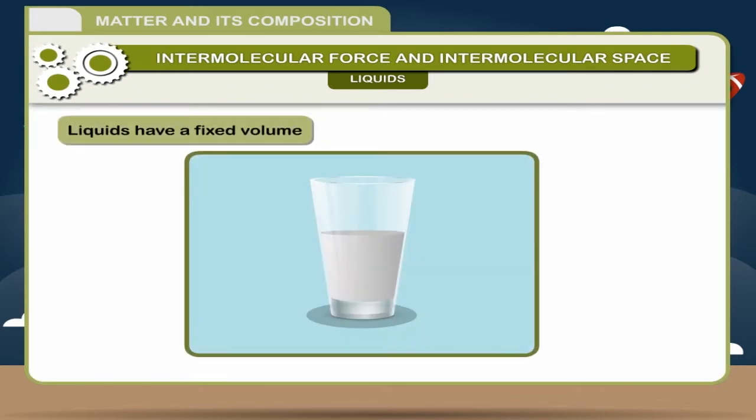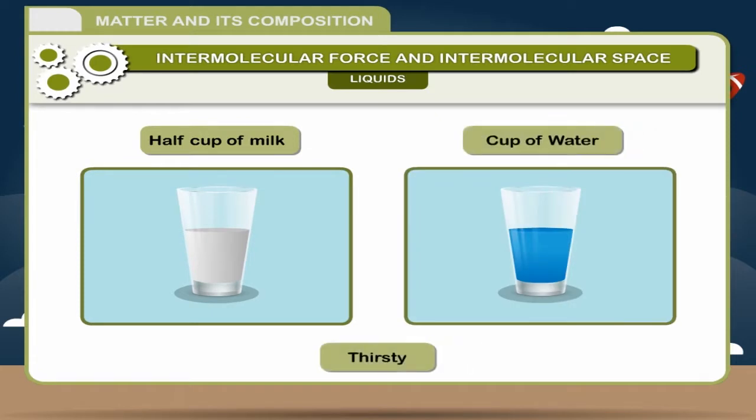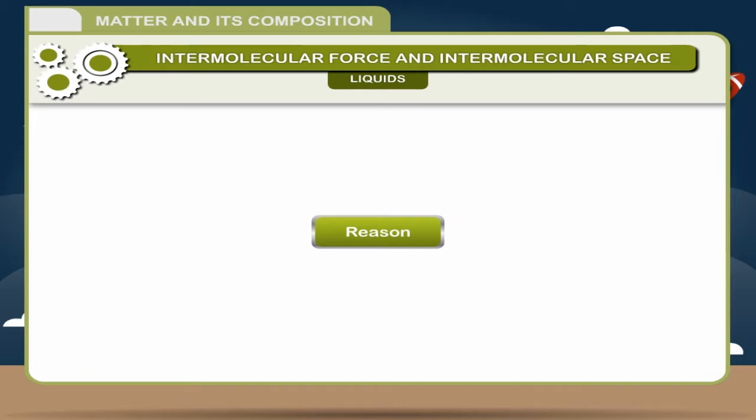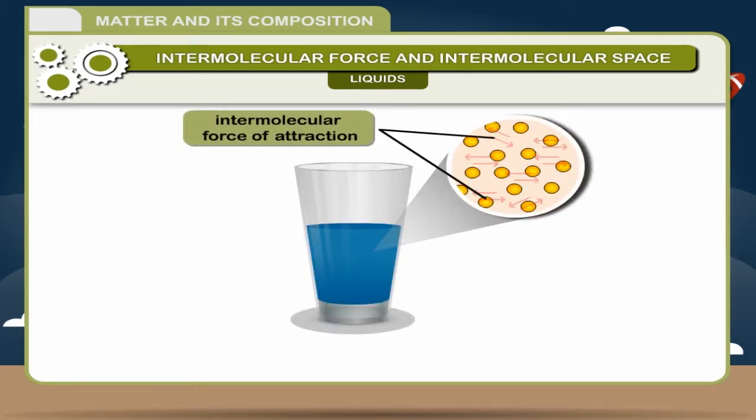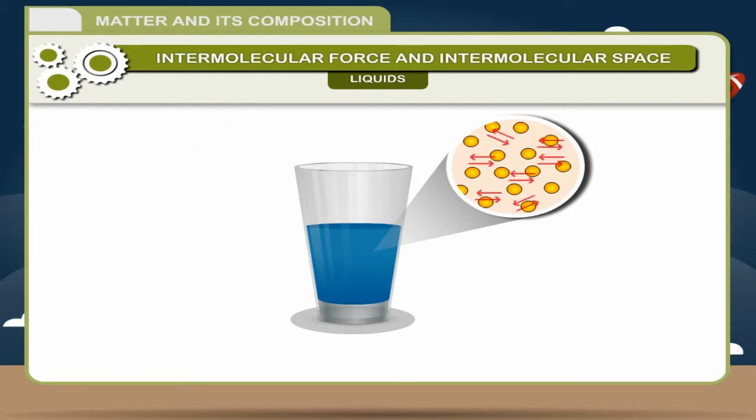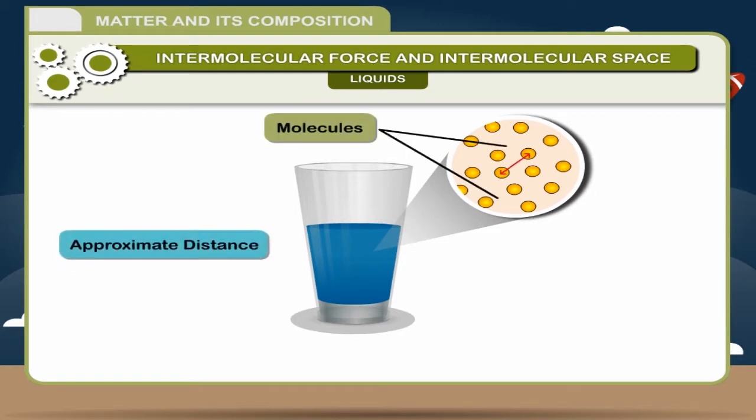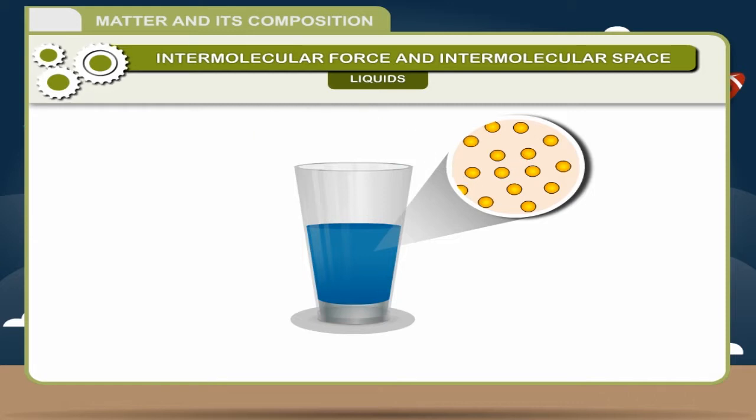Liquids have a fixed volume. When we say half a cup of milk, we have an idea as to how much space will be occupied by it. Similarly, if you are thirsty, you know how much water you can consume because we have a general idea of the volume of liquids. Reason: Since intermolecular force of attraction in a liquid is not very high, as in case of solids, the molecules remain at an approximate distance from each other. Unlike solids, their places are not fixed, so they can roam away from their place.